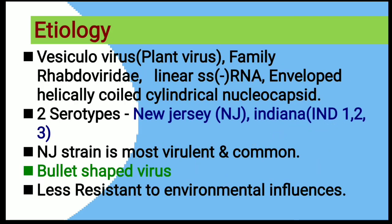Etiology: This is mainly caused by the vesicular virus, which belongs to the family Rhabdoviridae. It has a linear negative single-stranded RNA genome and is enveloped with helically-coiled cylindrical nucleocapsid. It has mainly two serotypes: New Jersey (NJ) and Indiana. Indiana is subdivided into Indiana 1, 2, and 3. The NJ strain is the most virulent and common strain. It is a bullet-shaped virus and is less resistant to environmental influence.